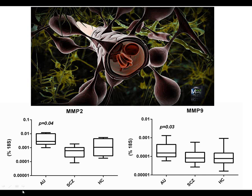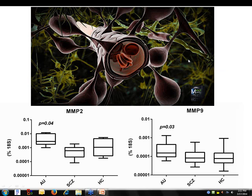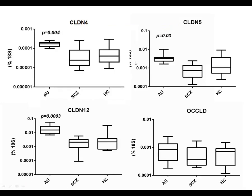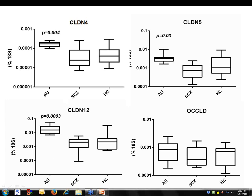We had the opportunity to study the brains of some autistic kids at the molecular level and compare them to healthy controls and schizophrenic individuals. Surprisingly, we found that metalloproteinases 2 and 9 — biomarkers of inflammation — are significantly higher in autistic kids compared to schizophrenic individuals and controls. We also found that components of the tight junction regulating the blood-brain barrier were modified — including claudins 2, 5, and 12 — while occludin was not, exclusively in autistic kids. This indicates not only neuroinflammation but also increased permeability of the blood-brain barrier.